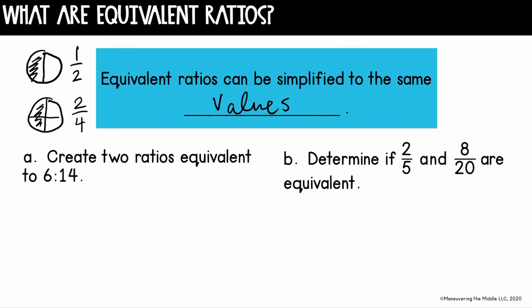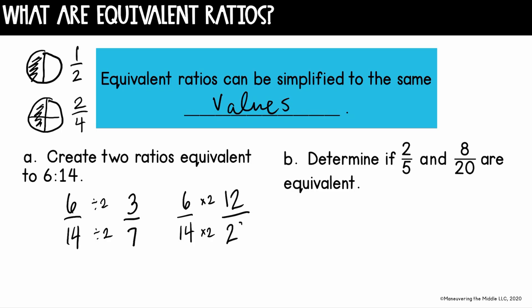We want to simplify ratios for the same reason. We can use the example of creating two equivalent ratios that are equivalent to six to 14. Just like I would simplify a fraction, I can simplify this — both six and 14 are divisible by two, so I can change it to three to seven. These are both worth the same amount, so they're equivalent. And we can also scale the other way: I could take six to 14 and multiply by two to get 12 to 28. So three to seven, six to 14, and 12 to 28 are all equivalent ratios.